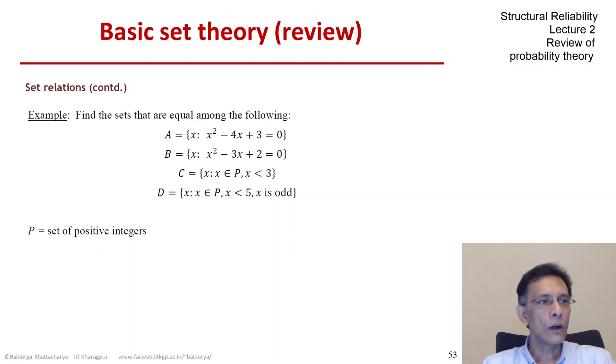If you solve the quadratic equation for A, then A is composed of the integers 1 and 3. Likewise, B is 1 and 2, C is also 1 and 2, and D is 1 and 3. So the answer is that the sets A and D are equal and B and C are equal.